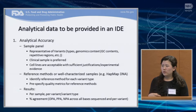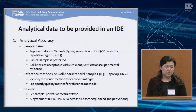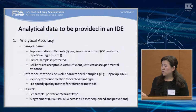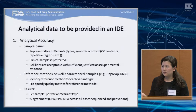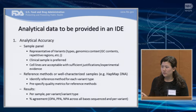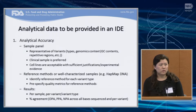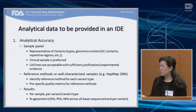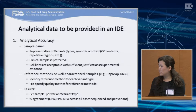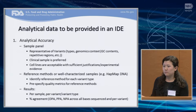For the reference method, we accept analytically validated comparator methods. If you have a reference method, you will summarize results as sensitivity and specificity. If you don't have a reference method and use a comparator method, then you will show the result as percent agreement — showing similar metrics, just with different terminology. It's important that reference methods be pre-specified with acceptance criteria and how they will be used. Results need to be summarized by sample and by variant types in terms of percent agreement: overall percent agreement, negative agreement, and positive agreement.